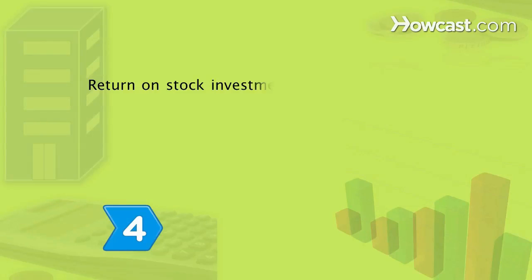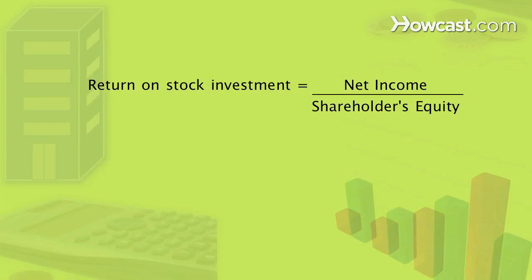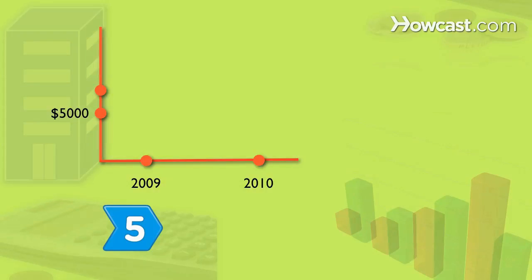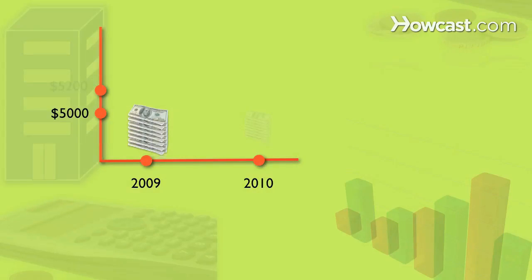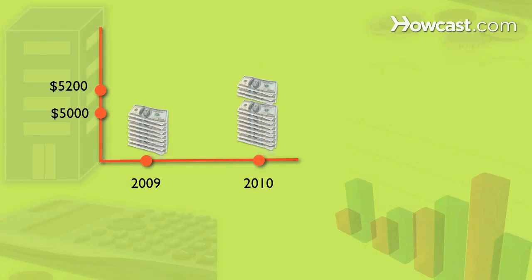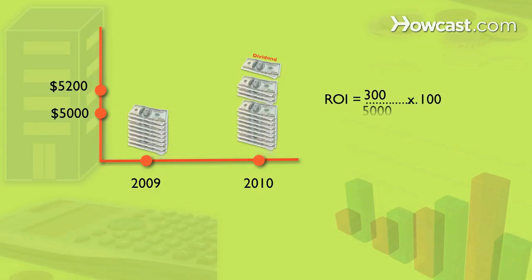Step 4: Compute the return on stock investments with a variation of the basic formula. Step 5: Imagine you invest $5,000 in a company. One year later, the stock's value has risen to $5,200, and you earn $100 in dividends. Use the new formula to calculate your ROI at 6 percent.